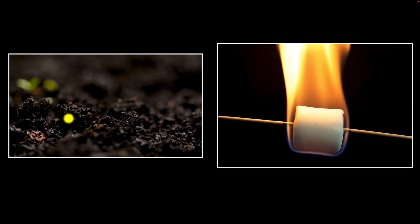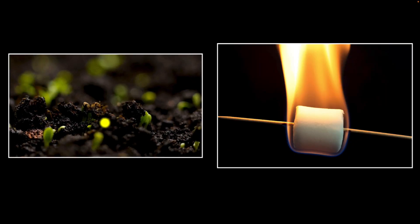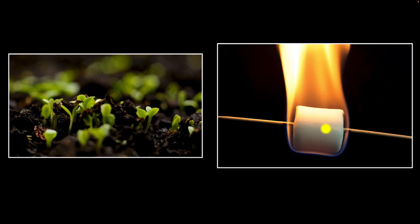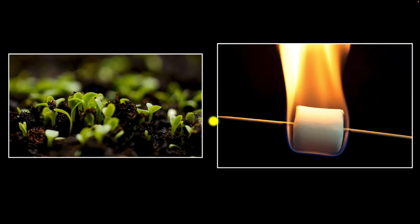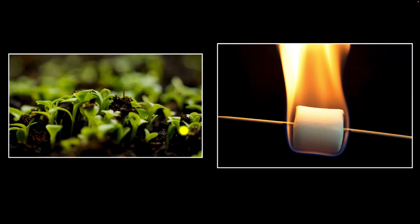Consider these two processes: one where a plant is growing — this is a time lapse — and another one where we are burning a marshmallow. Both of these involve chemical changes. How do we know?